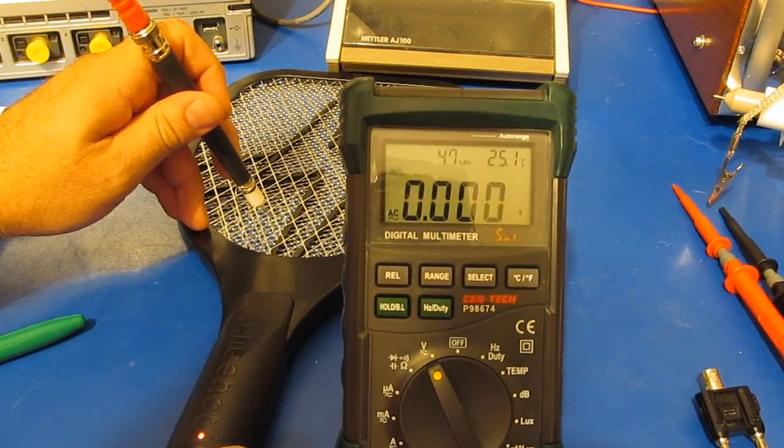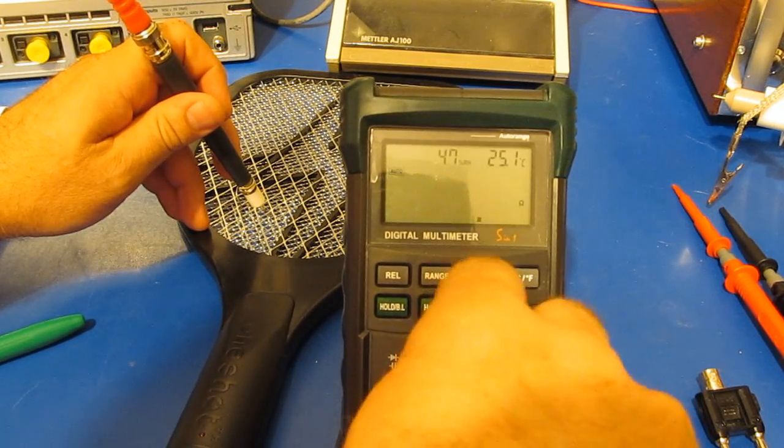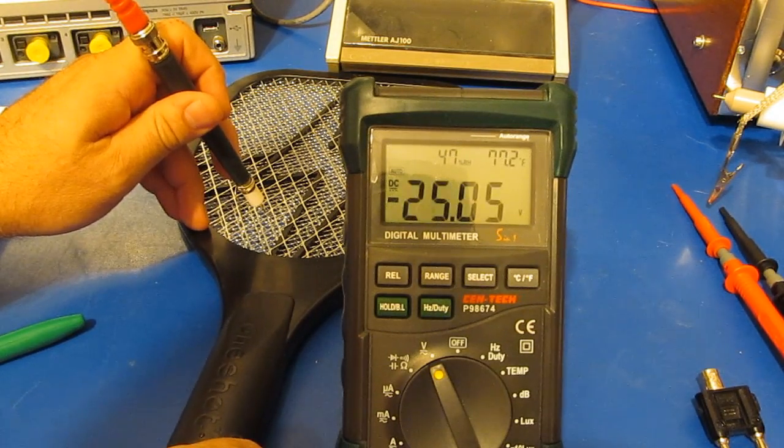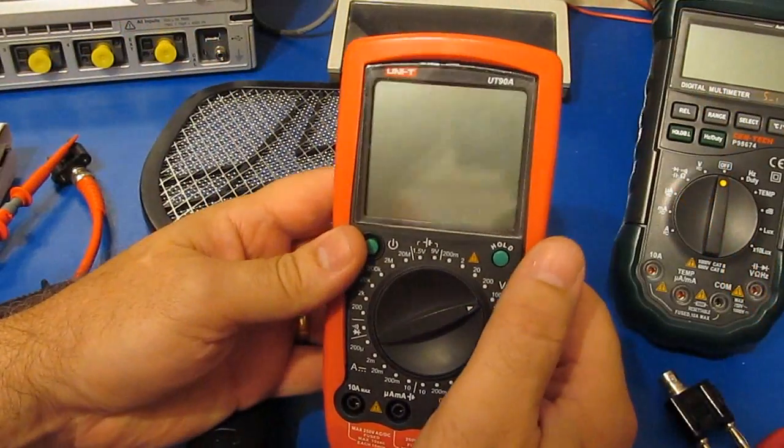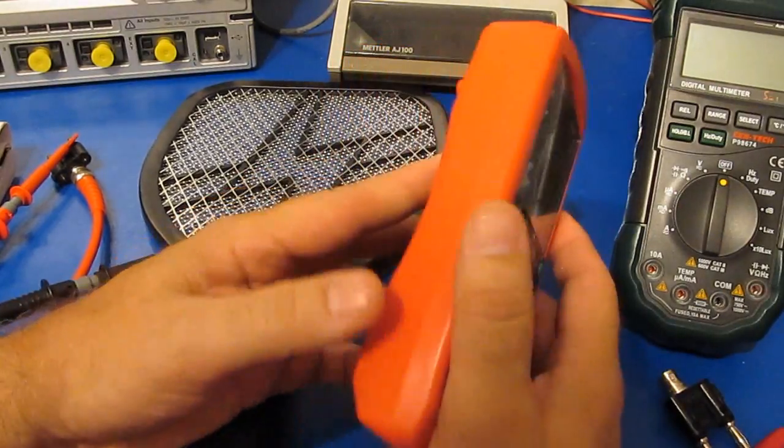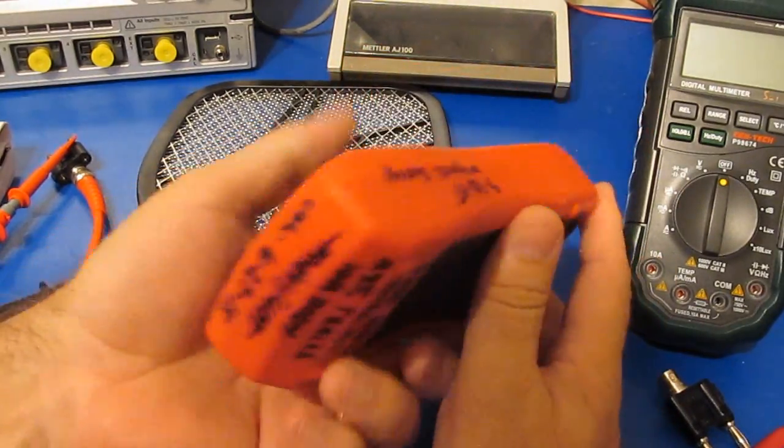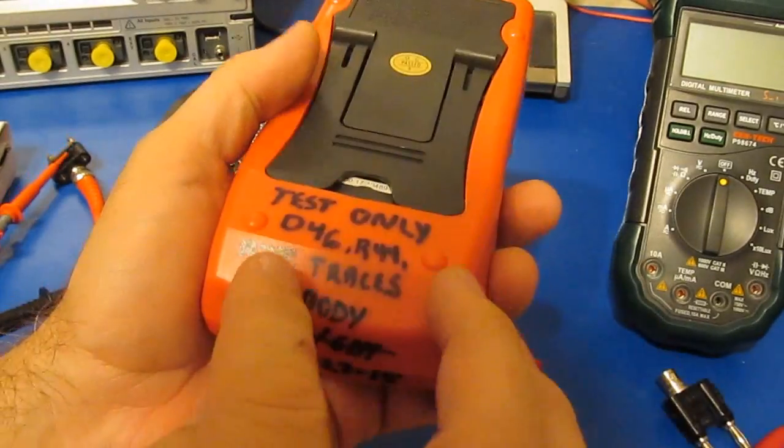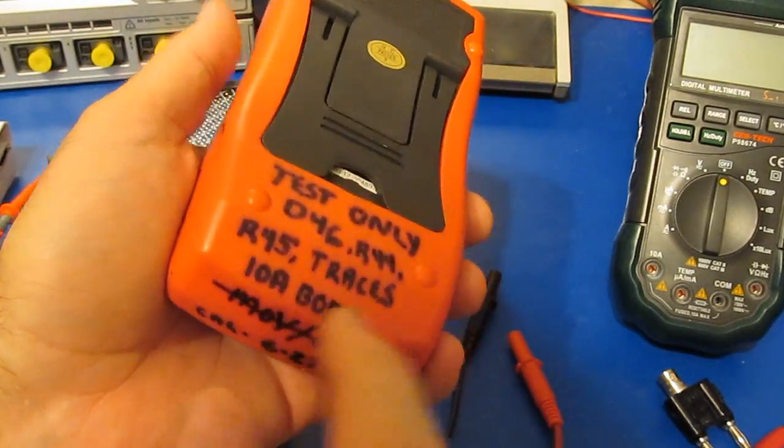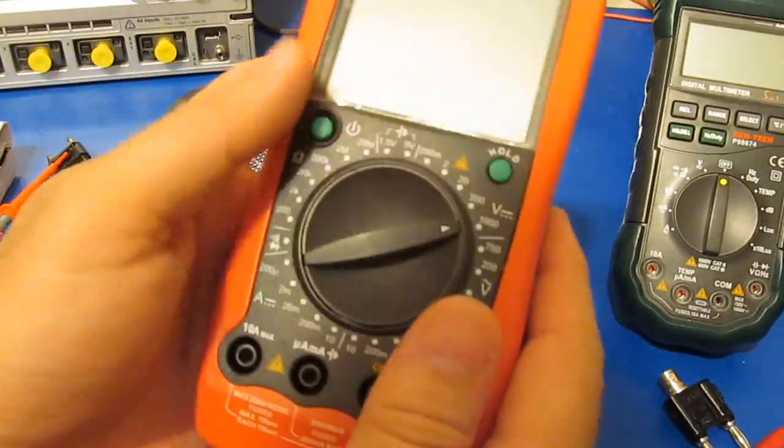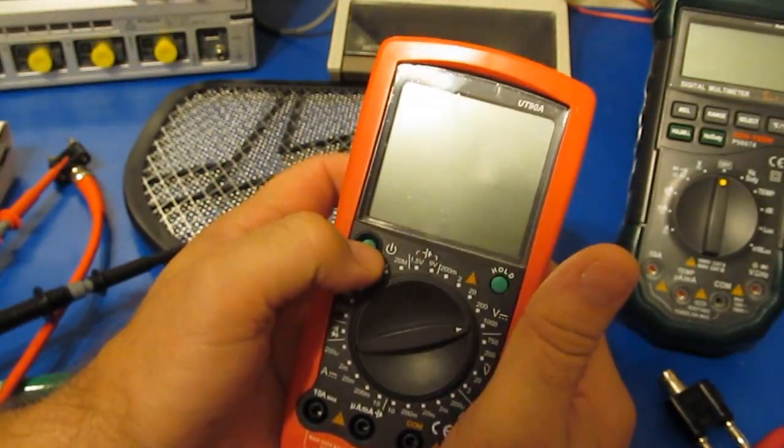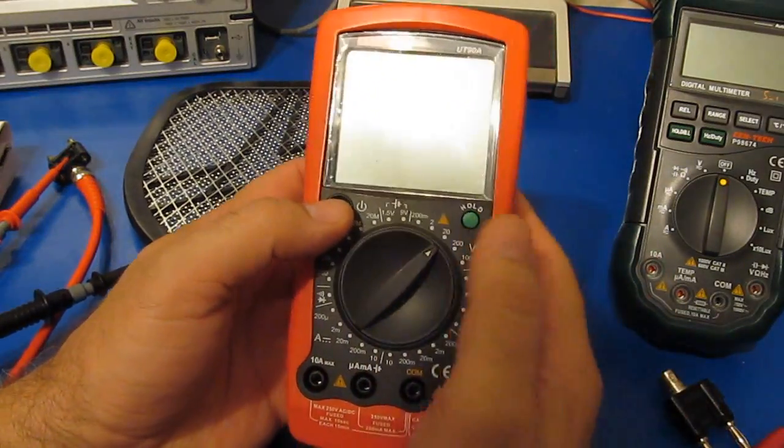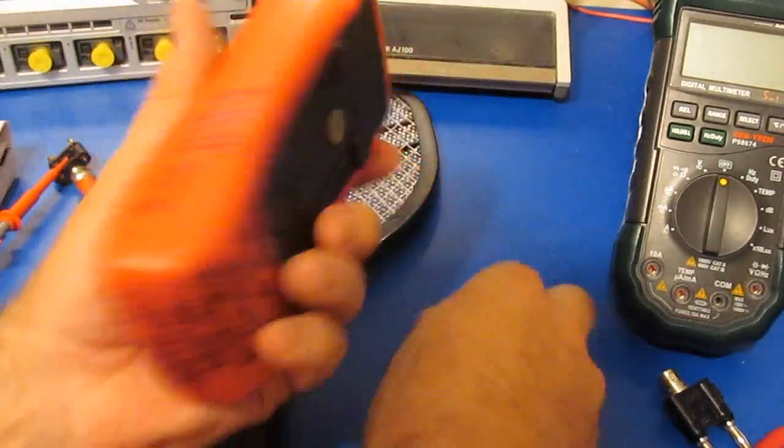This is the UNI-T UT90a. You may have seen this in several of my videos. It's been damaged quite a few times and repaired. I've actually burned several traces on the circuit board and laid down wires to repair them, but this meter still works fine. The selector switch is a little rough now. Some of the damage that was done is actually on the selector switch.